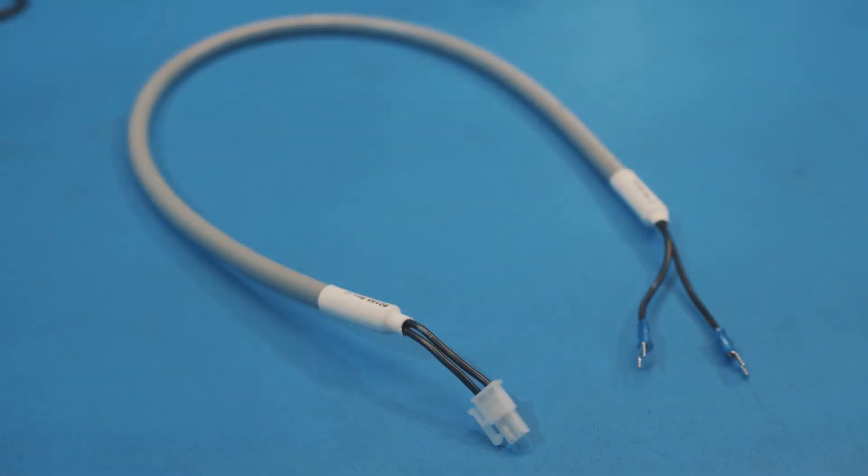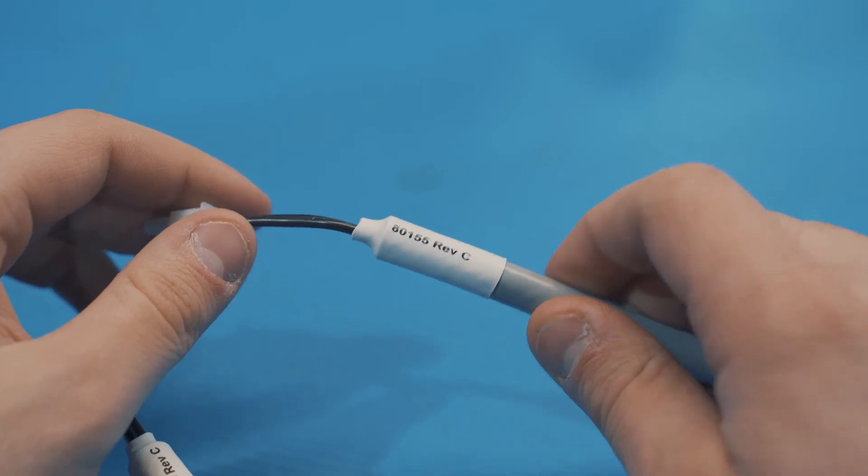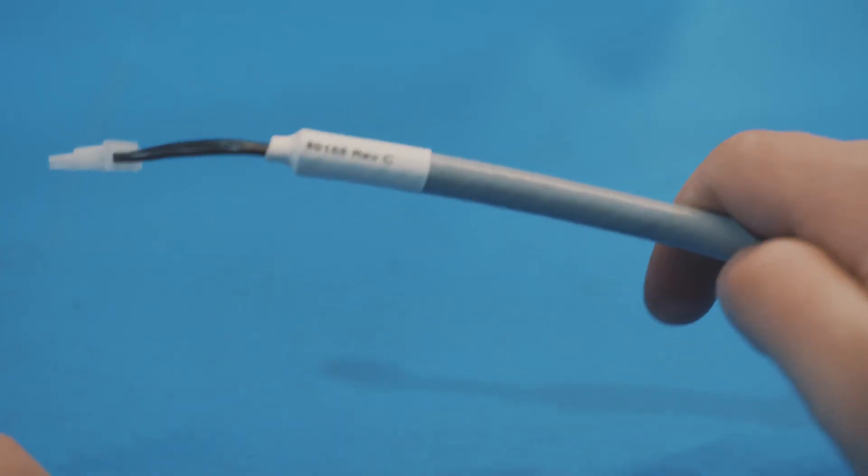Heat shrink tubing can also provide strain relief, and with the ability to screen print on the tubing, it can serve double duty as cable identification.